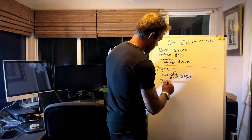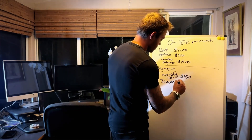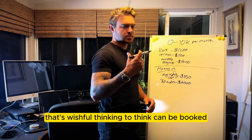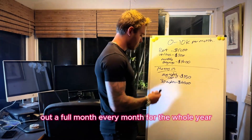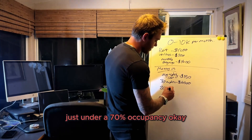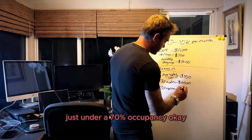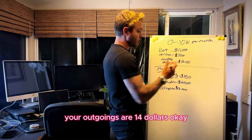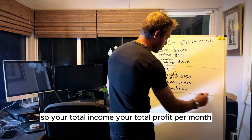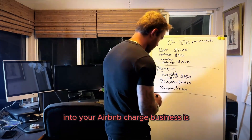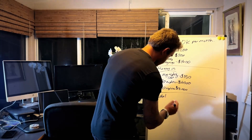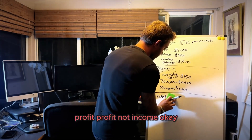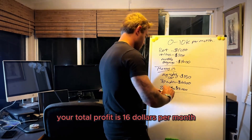At $150 a night, full occupancy over 30 nights, that's $4,500 in — but we won't work off that figure, that's wishful thinking. Let's work off 20 nights, just under 70% occupancy. So you're making $3,000 per month; your outgoings are $1,400. Your total profit — not income, profit — is $1,600 per month.